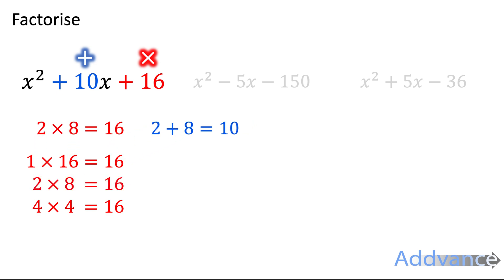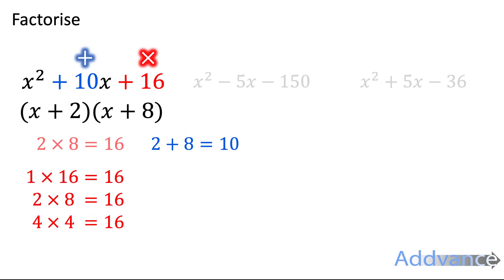So we get like this, 2 times 8 is 16, 2 plus 8 is 10. Now, we've found those two numbers that work. We can put them into brackets like this, x plus 2 times x plus 8.